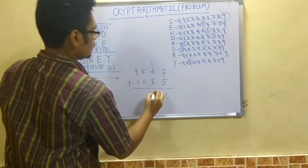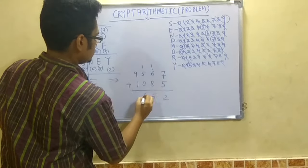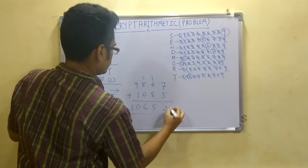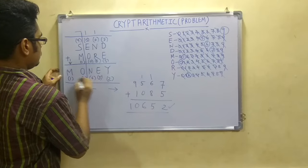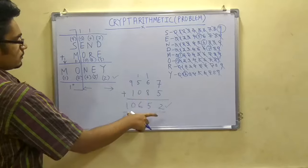So this turns out to be the same: 1, 0, 6, 5, 2. 1, 0, 6, 5, 2.